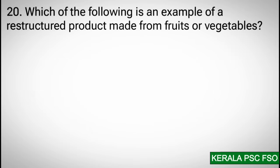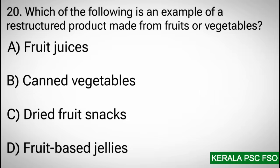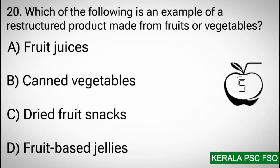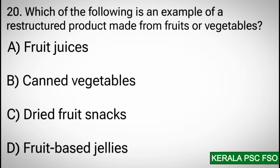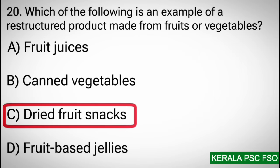Question 20: Which of the following is an example of a restructured product made from fruits or vegetables? Options: a) fruit juices, b) canned vegetables, c) dried fruit snacks, d) fruit-based jellies. Correct answer: c) dried fruit snacks.